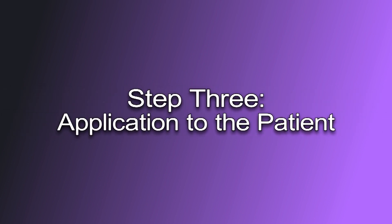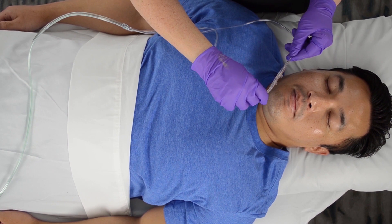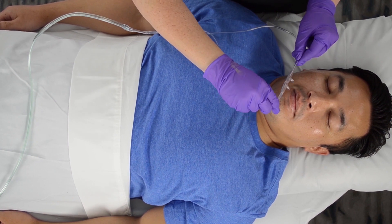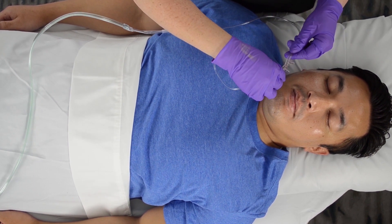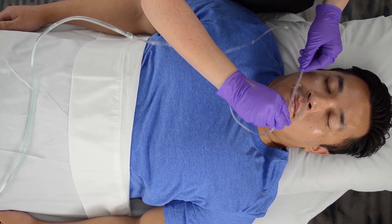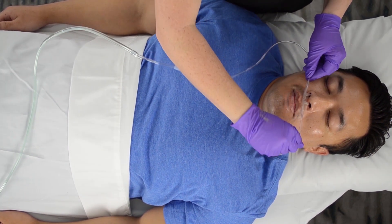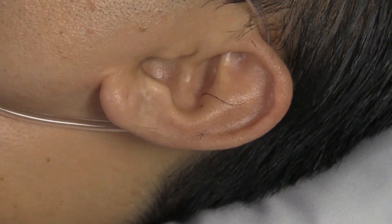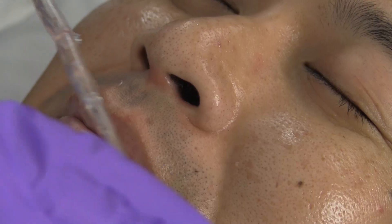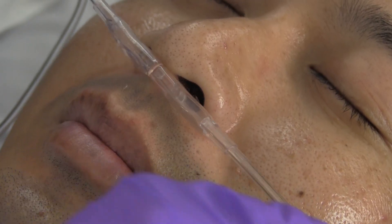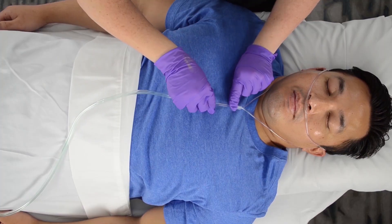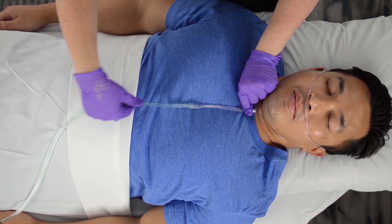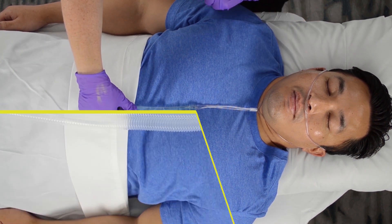Step three: application to the patient. Once the cannula has been attached to the sample line, the user will place the cannula on the patient. To apply the cannula to the patient, wrap the cannula's tubing around the patient's ears and insert the nasal prongs. Be sure to pull any slack to secure the cannula to the patient.